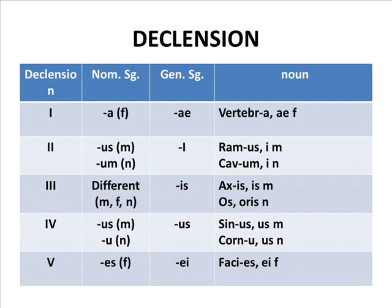The third declension is the most numerous one. It includes nouns of all genders and with different endings in the nominative, having the ending -is in the genitive. The fourth declension includes nouns of the masculine and neutral gender having the ending -us in the genitive. The fifth declension includes nouns having the ending -ei in the genitive.